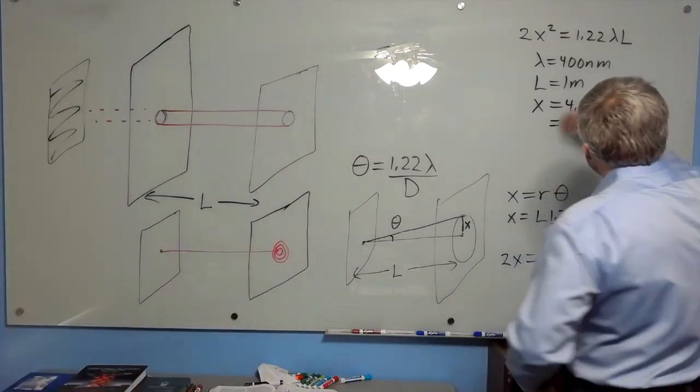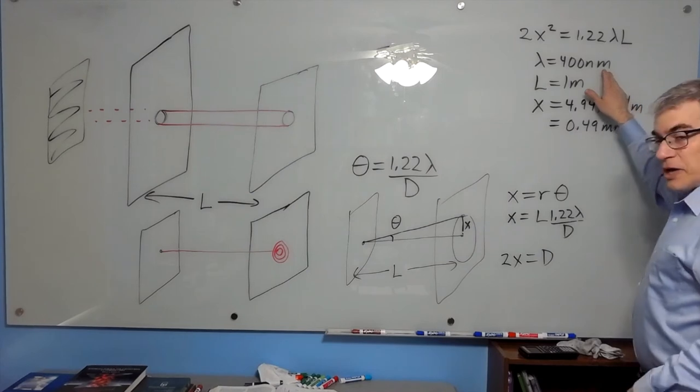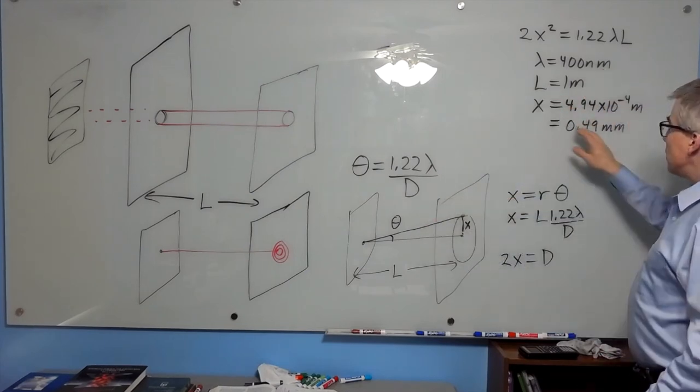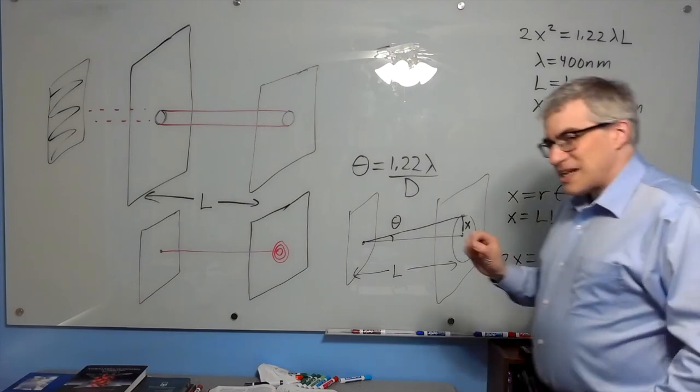Putting in specific numbers, if we say that we have a wavelength of 400 nanometers for violet light and a distance to the screen of 1 meter, the optimum pinhole size turns out to be 0.49 millimeters.